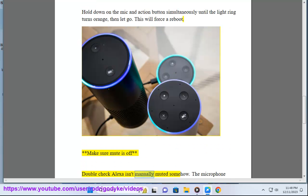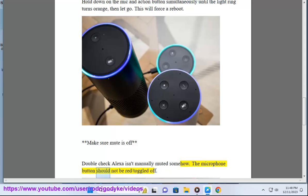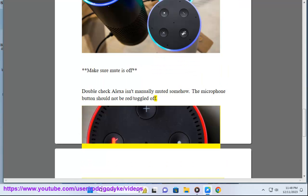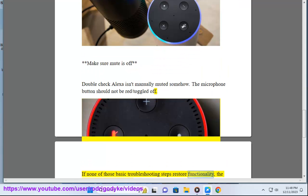Make sure mute is off. Double check Alexa isn't manually muted somehow. The microphone button should not be red or toggled off. If none of those basic troubleshooting steps restore functionality,